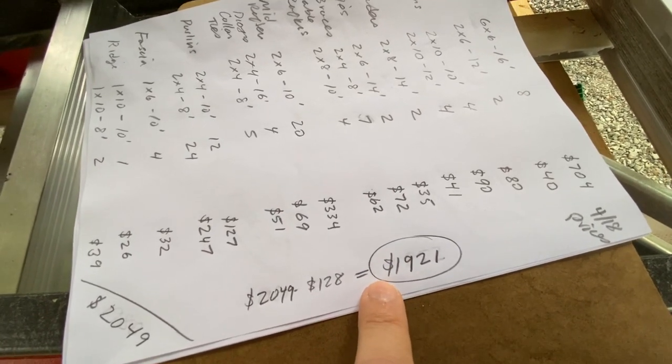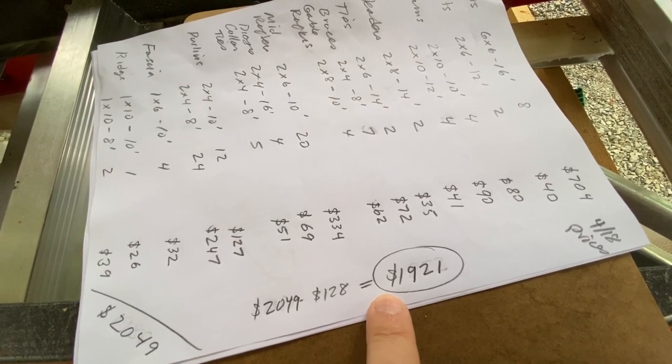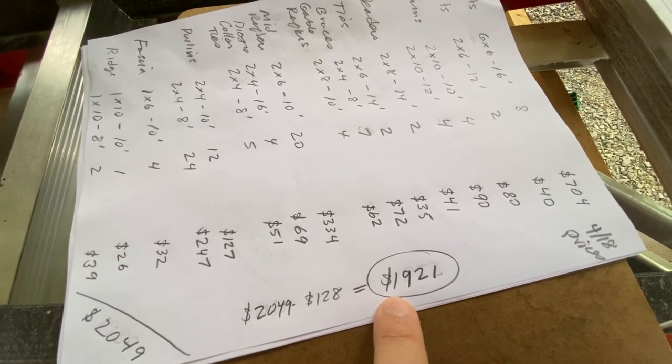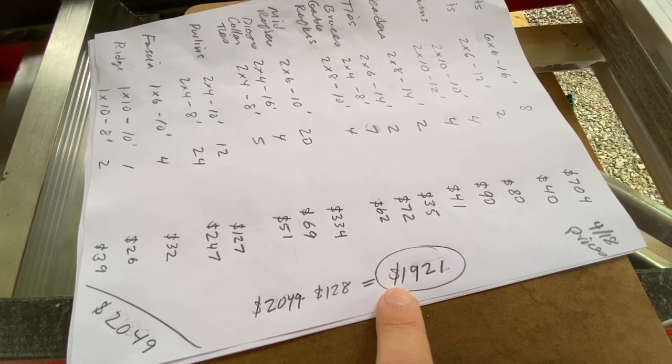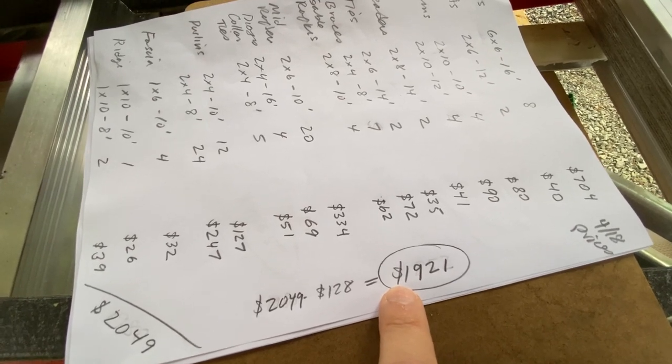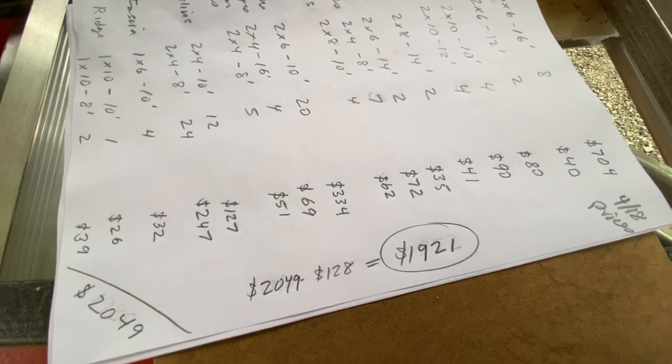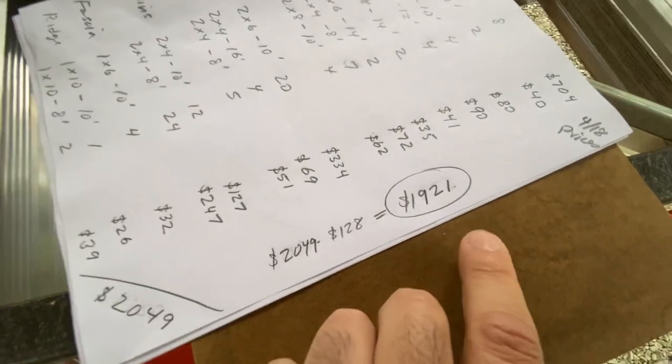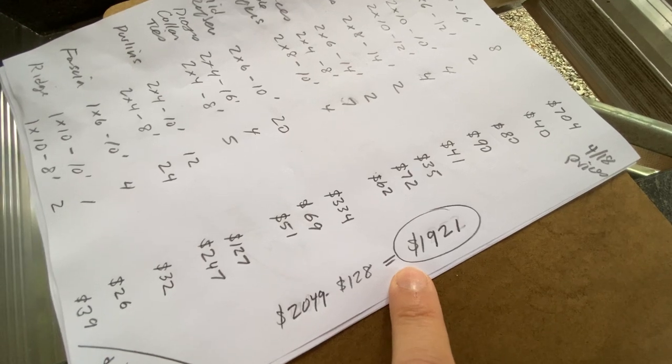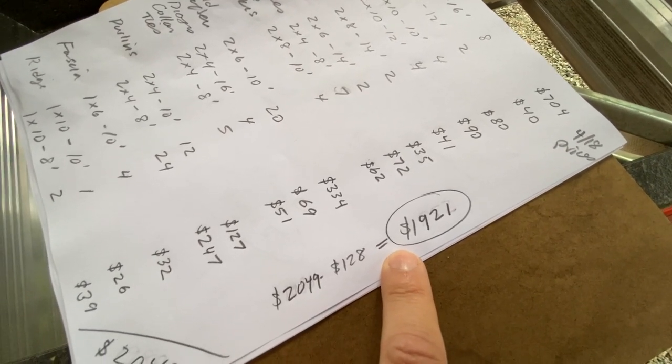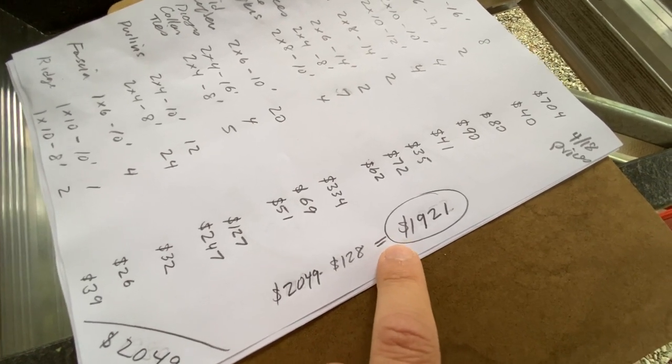This one is framed out to be 13 by 22 on the ground, and then two-foot overhangs all around gives me really like about a 17 by 26 dry area. So not having to spend $1,921 on lumber, that's a really big deal. That's a good number to see.